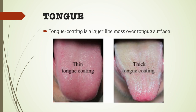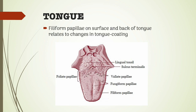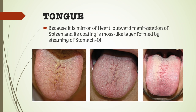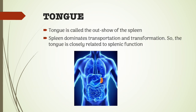The tongue coating is a layer like moss over the tongue surface. The filiform papillae on the surface and back of the tongue relates to changes in tongue coating. Through meridians and collaterals, the tongue directly or indirectly connects with many zangfu organs, especially the heart, spleen, and stomach. It is the mirror of the heart, the outward manifestation of the spleen, and its coating is the moss-like layer formed by the steaming of stomach qi. The tongue is called the outshow of the spleen, which dominates transportation and transformation.